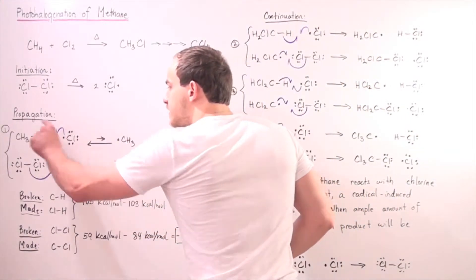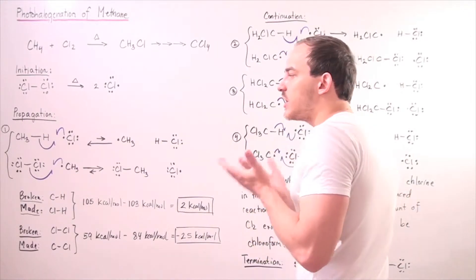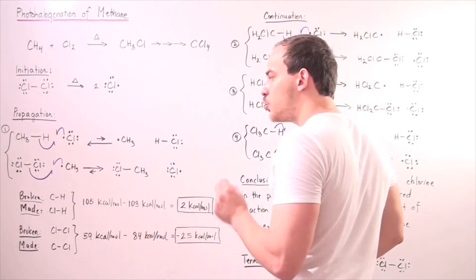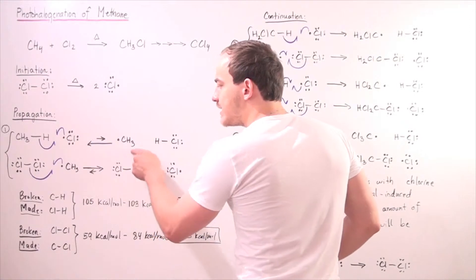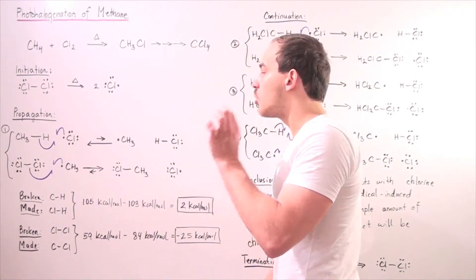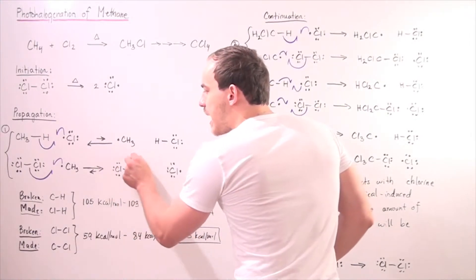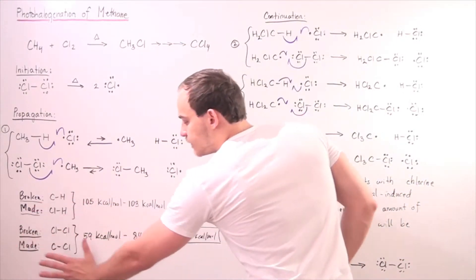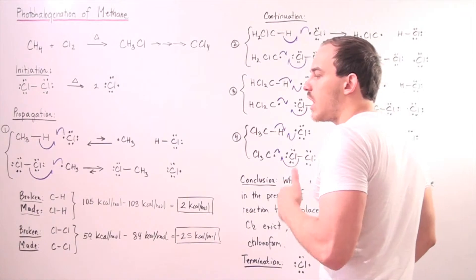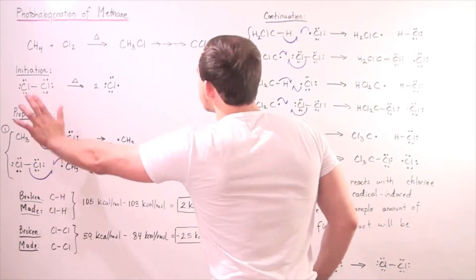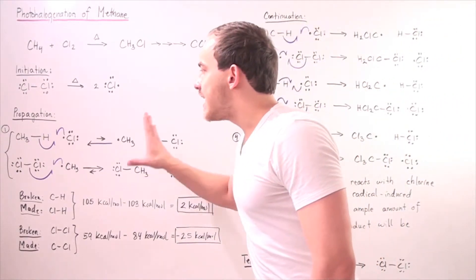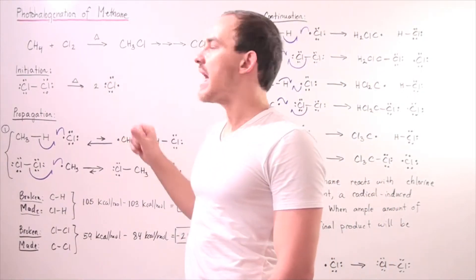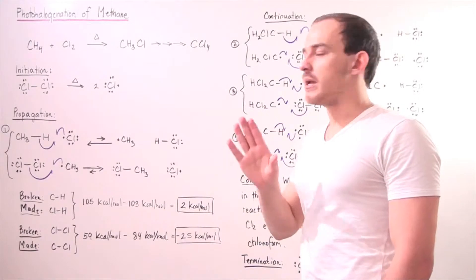Since the first propagation step is endothermic, the equilibrium lies toward the reactant side, meaning we produce a relatively small amount of the chain-carrying radical. However, a little can go a long way — that small amount of radical will react vigorously with the chlorine molecule because the second step is exothermic, and equilibrium lies toward the product side. Remember, we're assuming ample chlorine is present, so three more propagation steps can potentially take place.